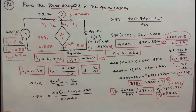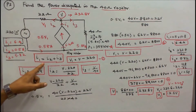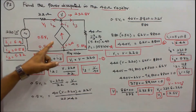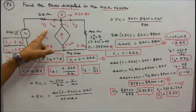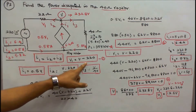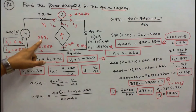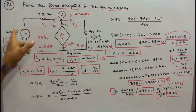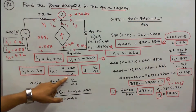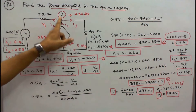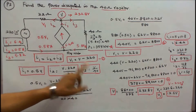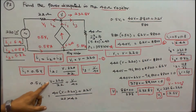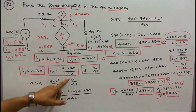Apply Kirchhoff's current law: I1 equals I2 plus I3. V1 equals V minus 220, divided by 22. I3 equals V divided by 40. Therefore 0.5 V1 equals (V minus 220) divided by 22, plus V divided by 40.